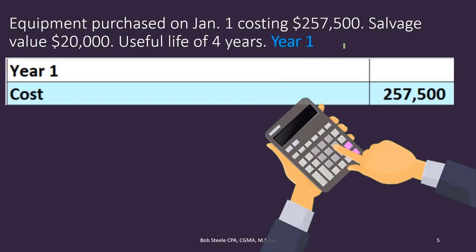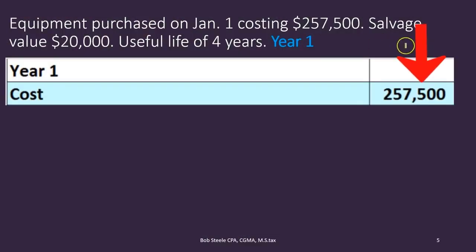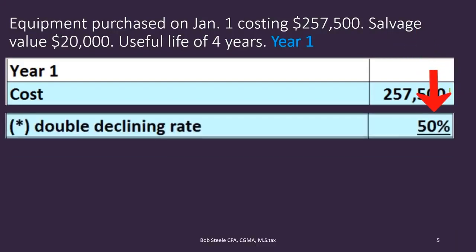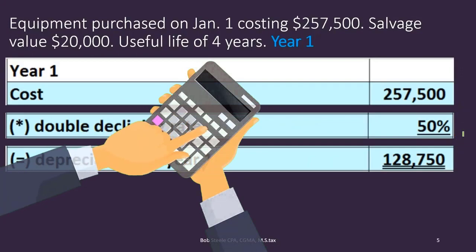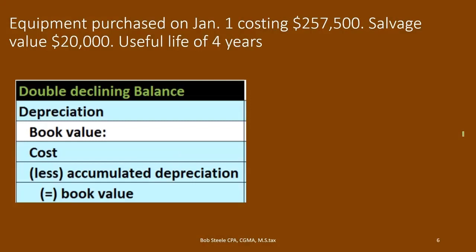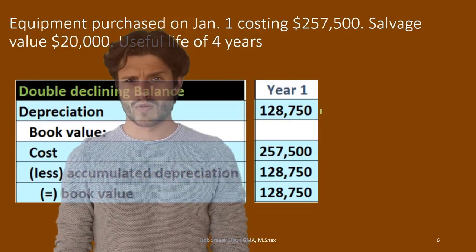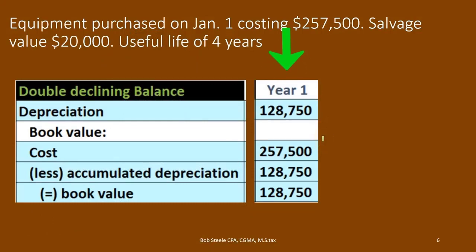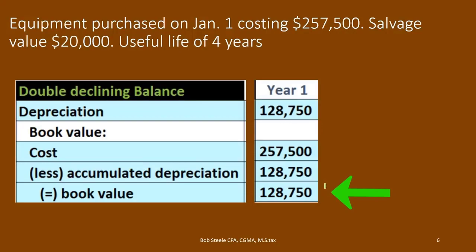Once we have the 50% rate, we can calculate depreciation for each year — and the expense will differ each year. In year one, we simply take the cost times the double declining rate: $257,500 × 50% = $128,750. This is the depreciation expense for year one. Looking at our table, the depreciation expense in year one is much higher than under straight-line, and the book value is now $128,750 — half the original cost.